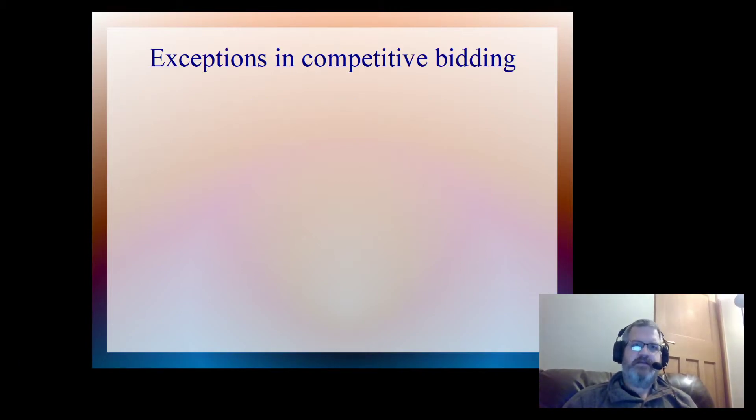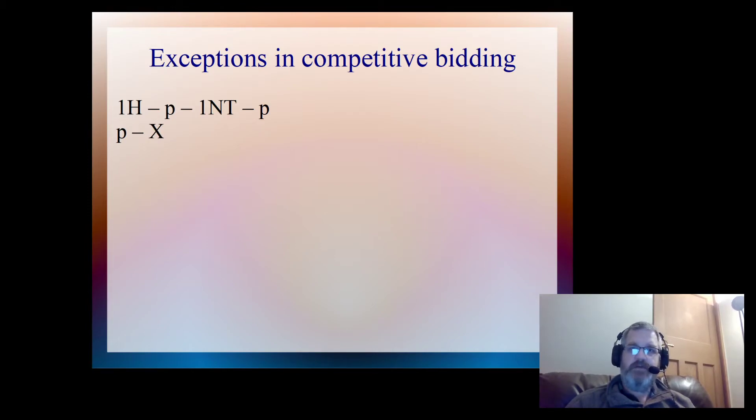So let's have a look at some of the exceptions then. Bear in mind those rules that we've set and the underlying meaning as we go through these examples. So in this example the opposition have opened one heart and in second seat we pass. The opponent responds with one no trump, pass from partner, pass from the opener, and we double. So what's the double in this situation? If we think back to the rules, we've doubled a no trump contract so that means this is for penalties, right? But wrong. If we had 16 plus points surely we would have found a bid in that second seat.